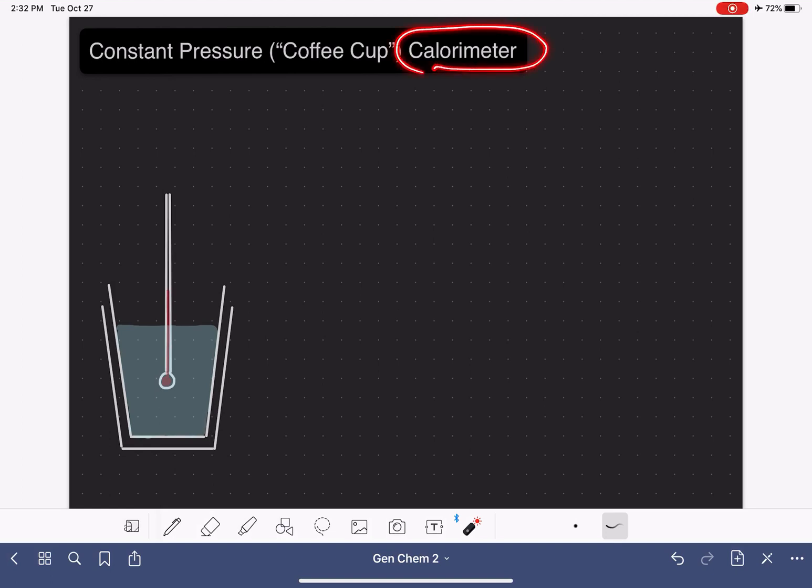A calorimeter is a device or a piece of equipment that we can use to measure the heat that is exchanged in a chemical reaction.